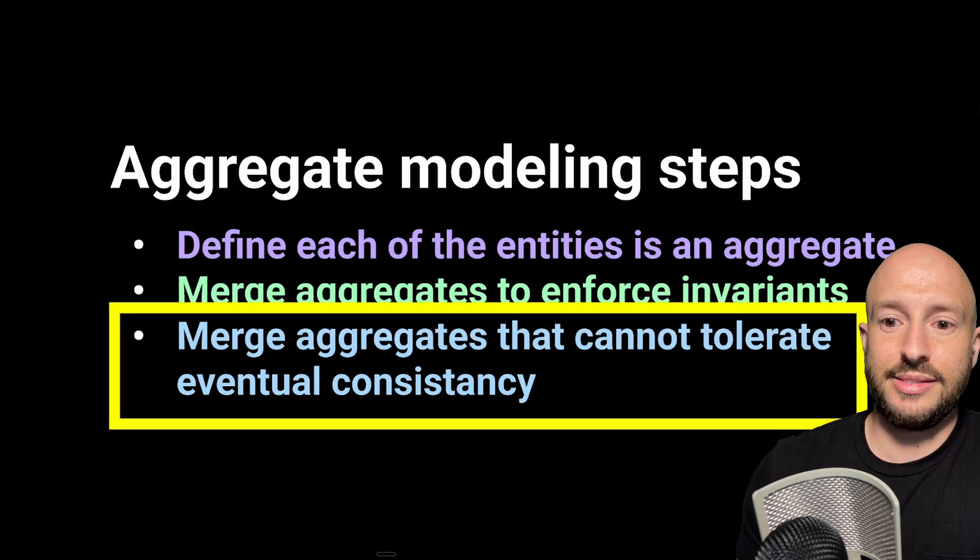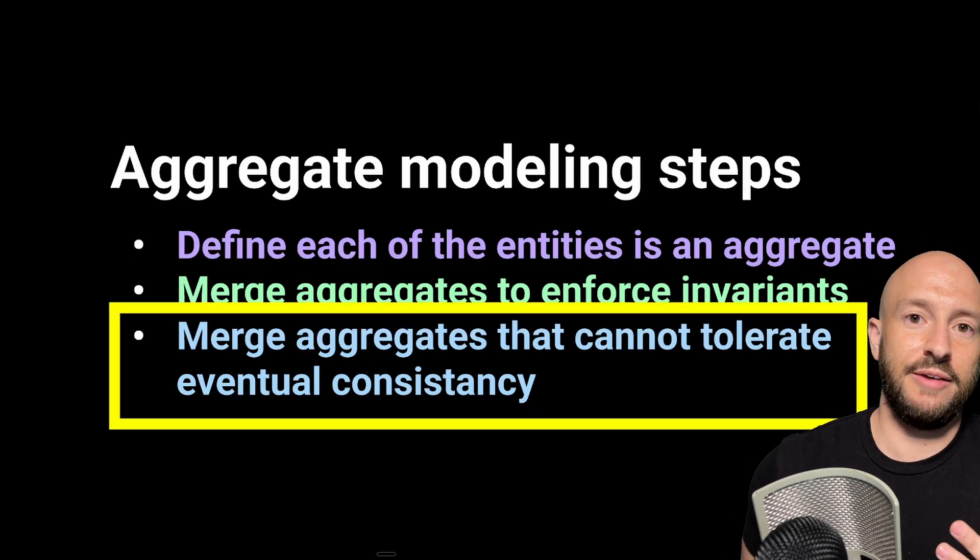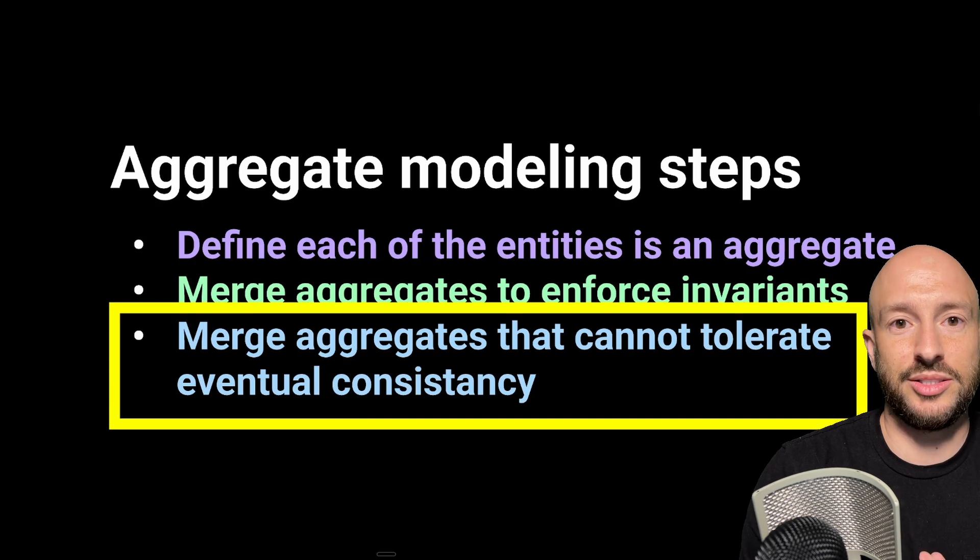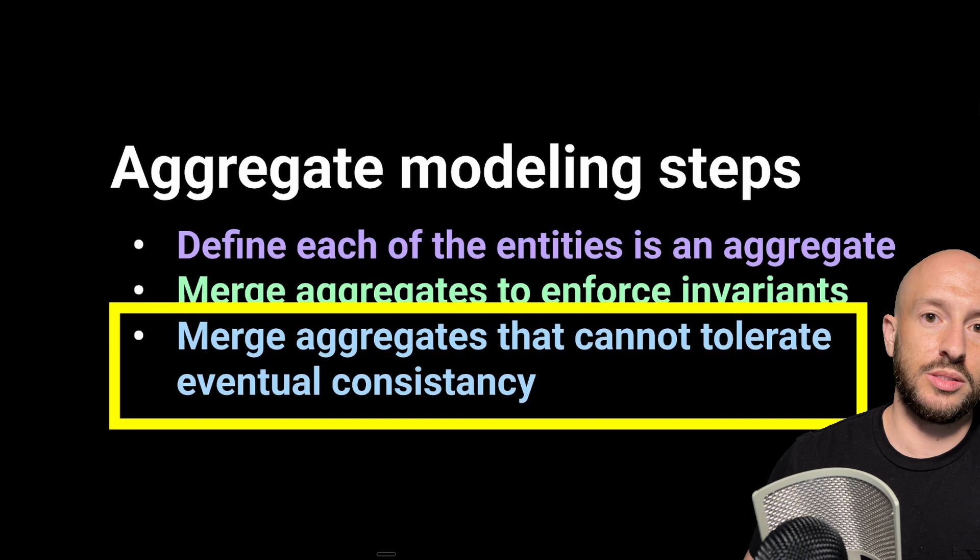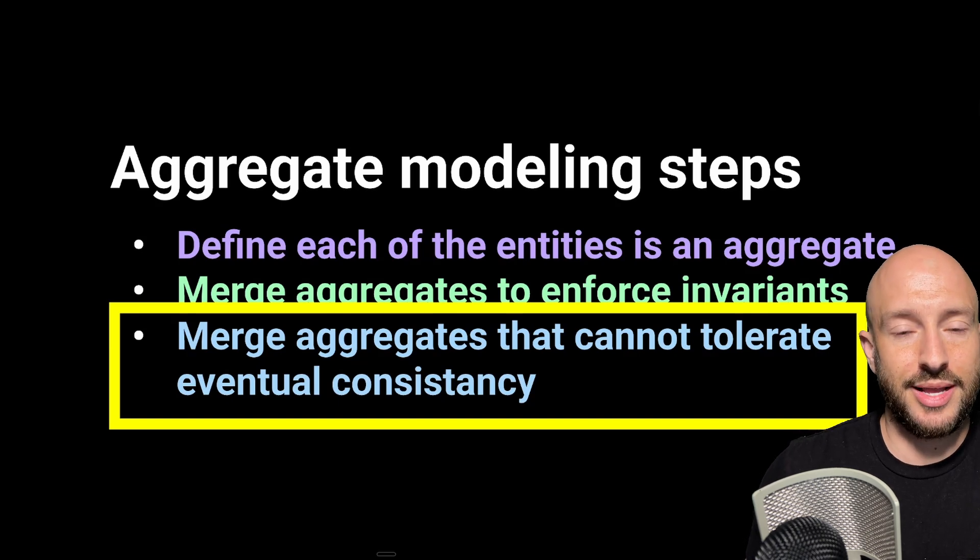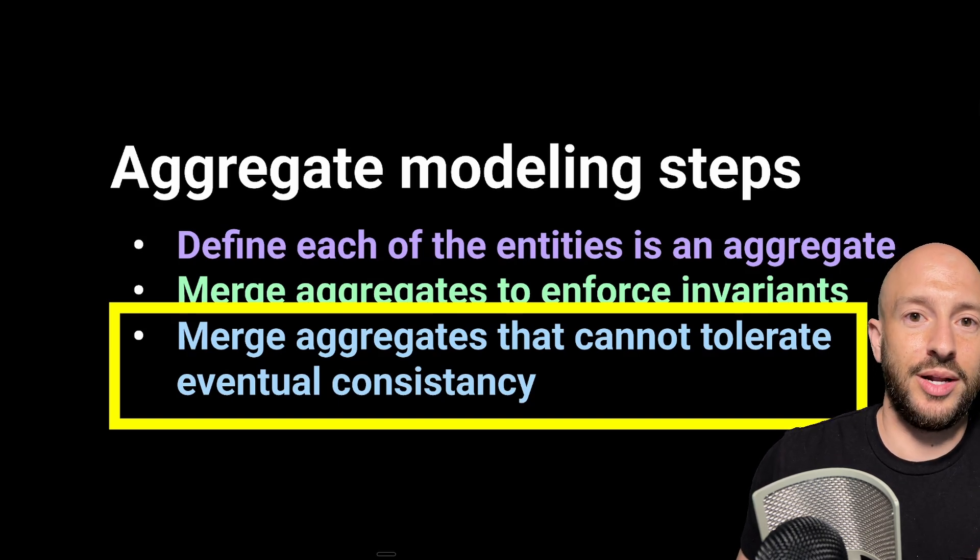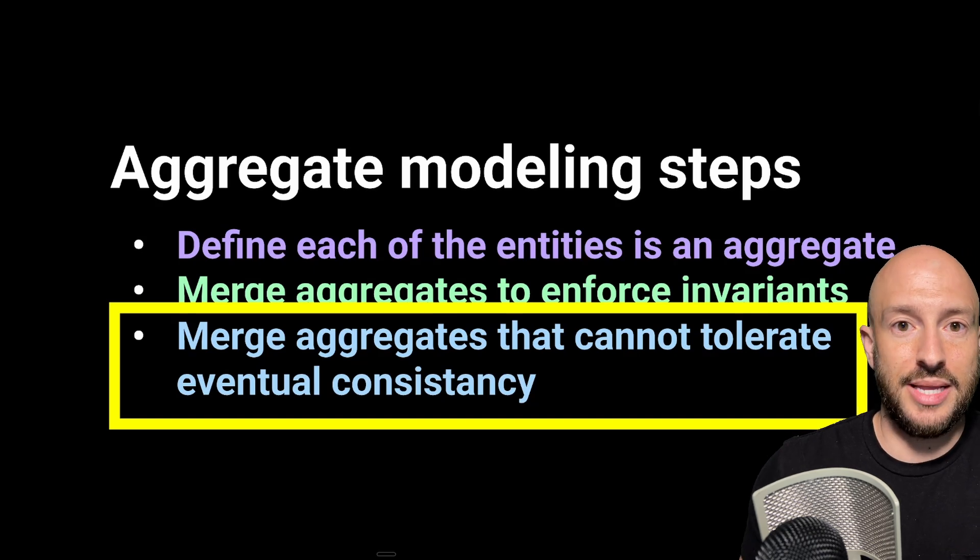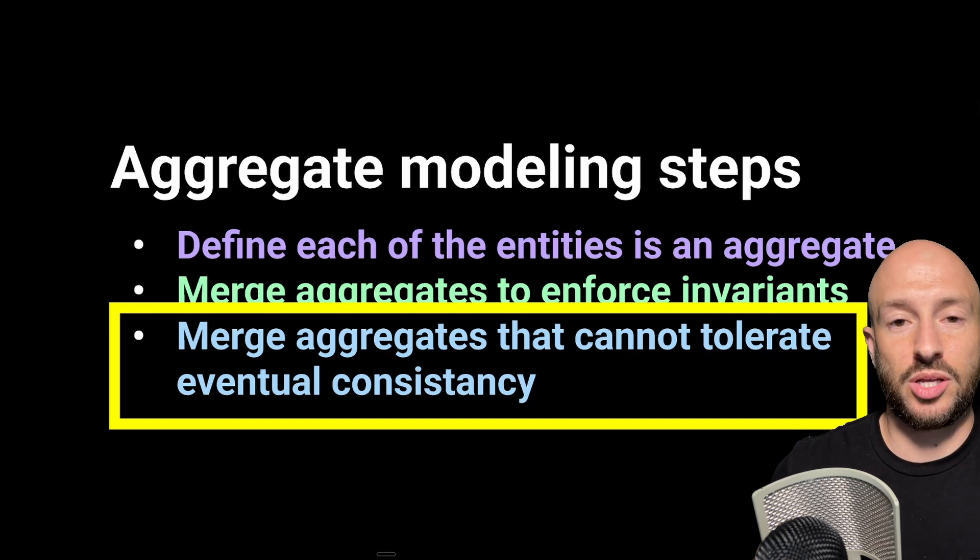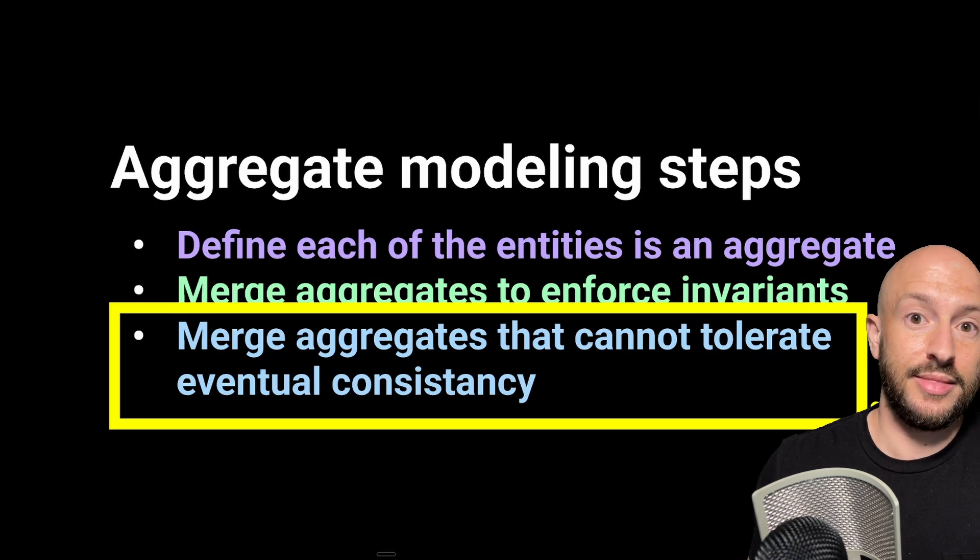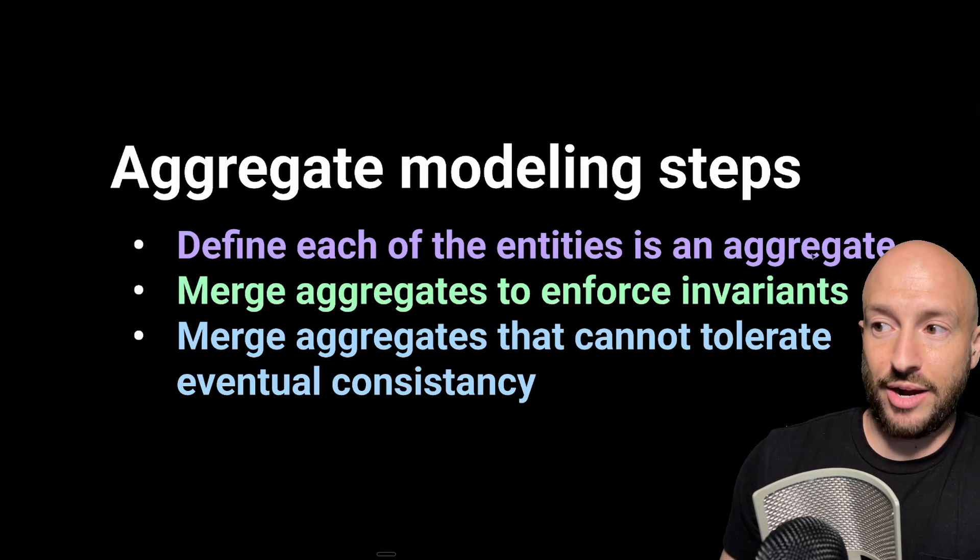The last step comes from the fact that if you change one aggregate and it needs to change values in another aggregate, this is done via domain events. So the way this works is you make changes on an aggregate, this raises a domain event and relevant parties subscribe to these events, and they make changes internally. This means that the reacting aggregate will only be eventually consistent with the first aggregate. So if you have two aggregates that can't tolerate this latency, then you can merge them also into a single aggregate.